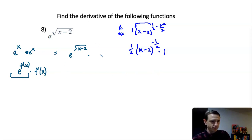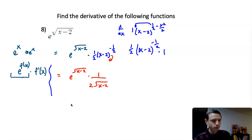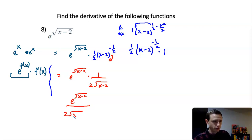So rewriting this, we have 1/2 times x minus 2 to the negative 1/2. Then writing the full derivative: e to the square root of x minus 2, times 1 over 2 times the square root of x minus 2, since the negative exponent brings it to the denominator. From there we can rewrite it as e to the square root of x minus 2, all over 2 times the square root of x minus 2.